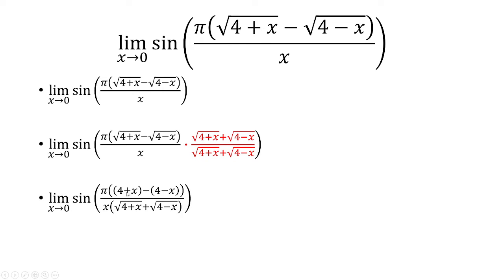So we multiply this out. The 4 plus x, the square roots go away, so we have 4 plus x minus quantity 4 minus x at the top. And the denominator, we leave it in factored form.